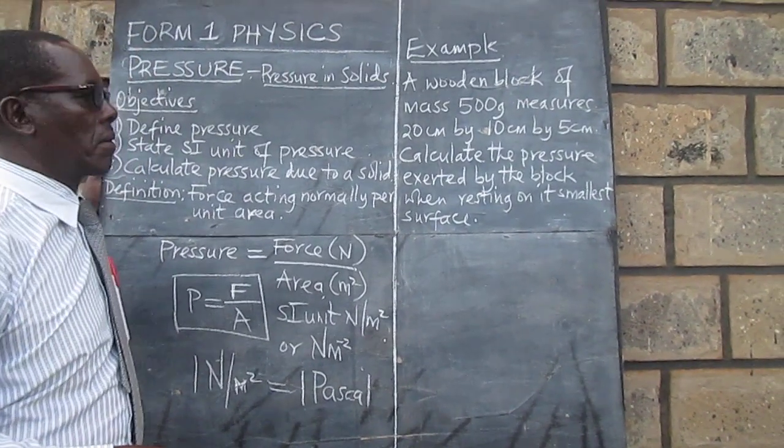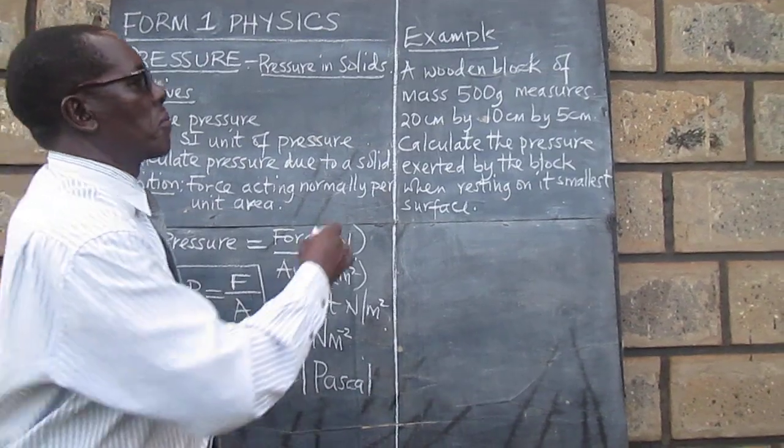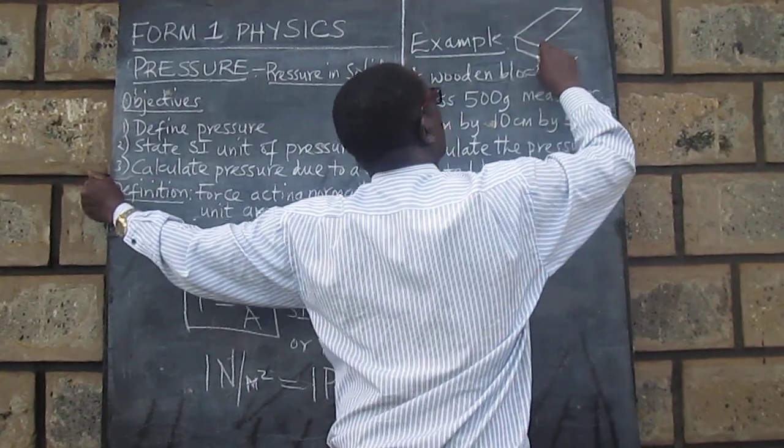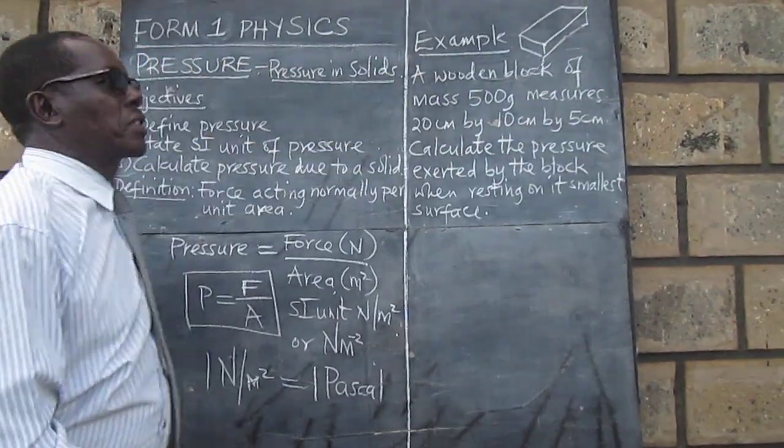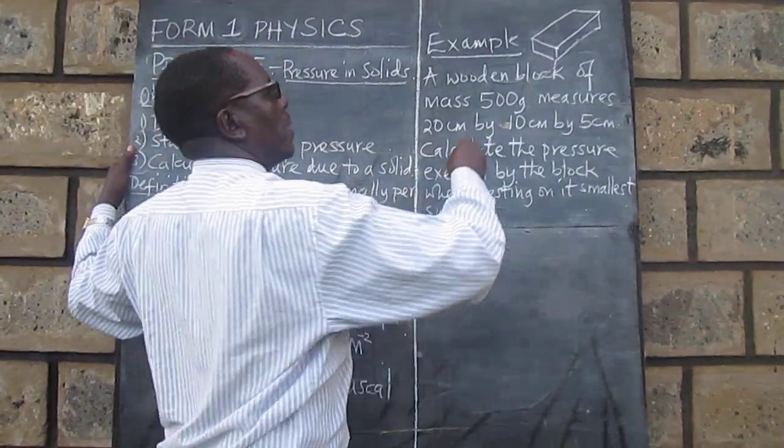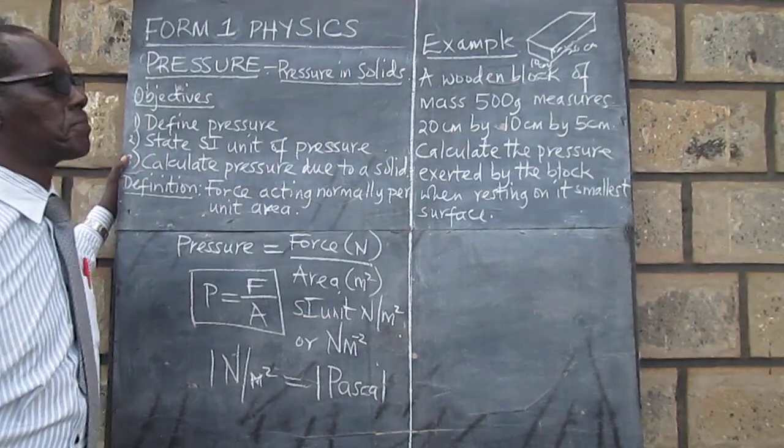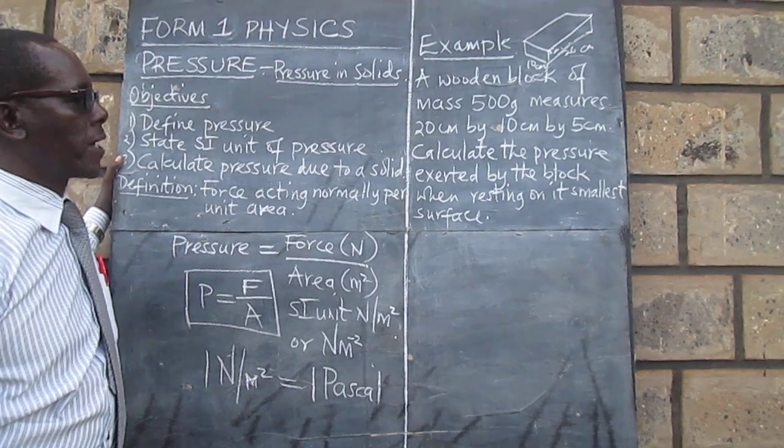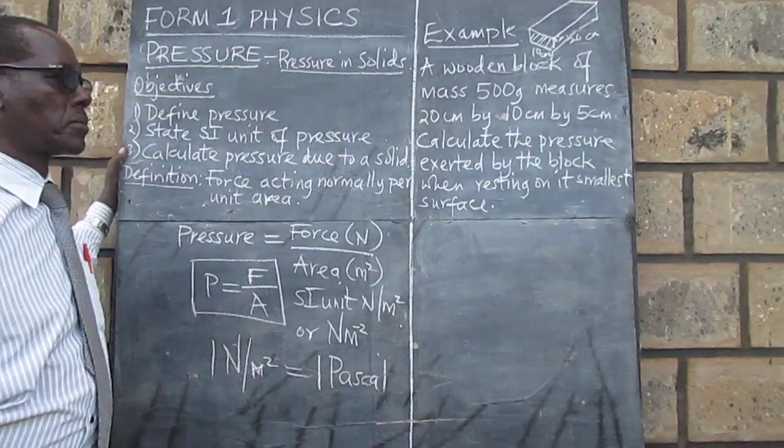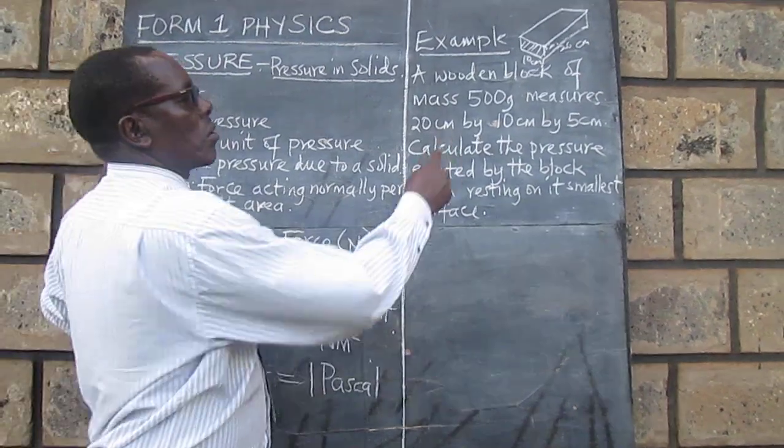We can picture the kind of block we are given. We can see it is in the shape of a cuboid from the measurements we are given. A rough sketch would be something like that where we have the longest side being 20 cm, and then 10 cm and 5 cm for the shortest. It means then that the wooden block will be resting on this face. We can therefore work out that area and also convert this mass to weight.